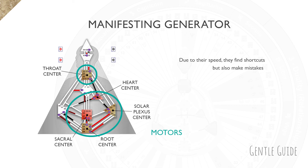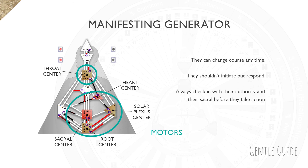Due to their speed, Manifesting Generators find shortcuts but also make mistakes and need to go back and retake steps, which can be frustrating — however, that is completely normal for them and they should just embrace the process. Unlike Generators, who once they commit stay on the same course, Manifesting Generators need to check in with their sacral center all the time — when they come up with any idea and before they physically commit to it, and then for every significant turn. Despite wanting to initiate, they shouldn't, and that can be the hardest part.